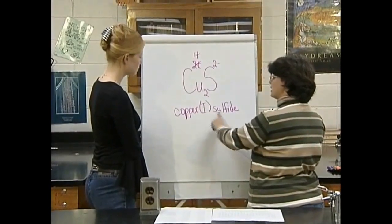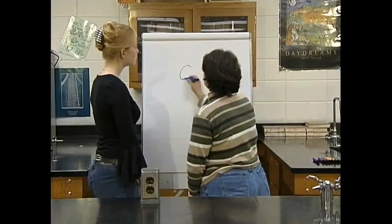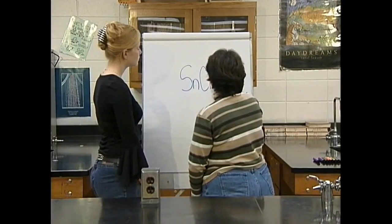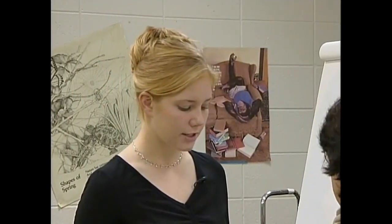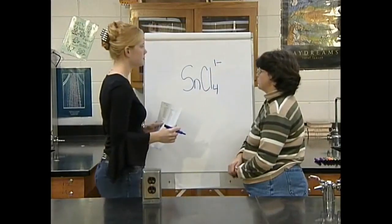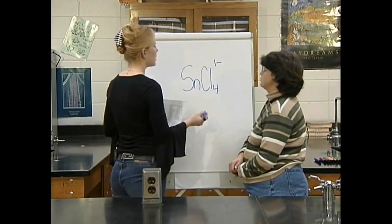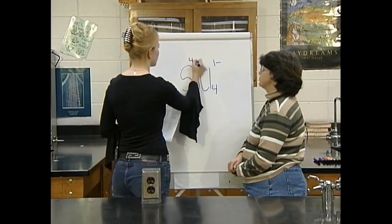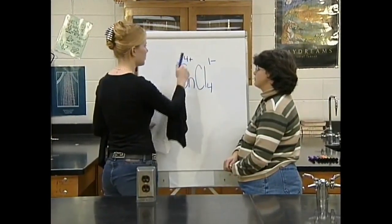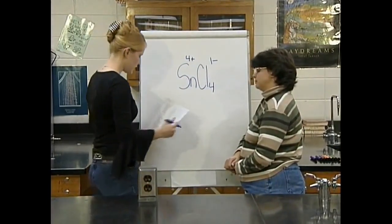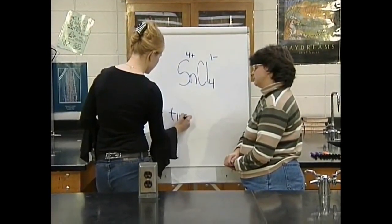The Roman numeral simply tells us which ion is present. Now let's write the name for SnCl₄. The overall charge must be zero. Chloride has a -1 charge — four chloride ions gives a total of -4. So the total positive charge must be +4. Since there is only one tin ion, its charge must be +4. The name is therefore tin(IV) chloride.